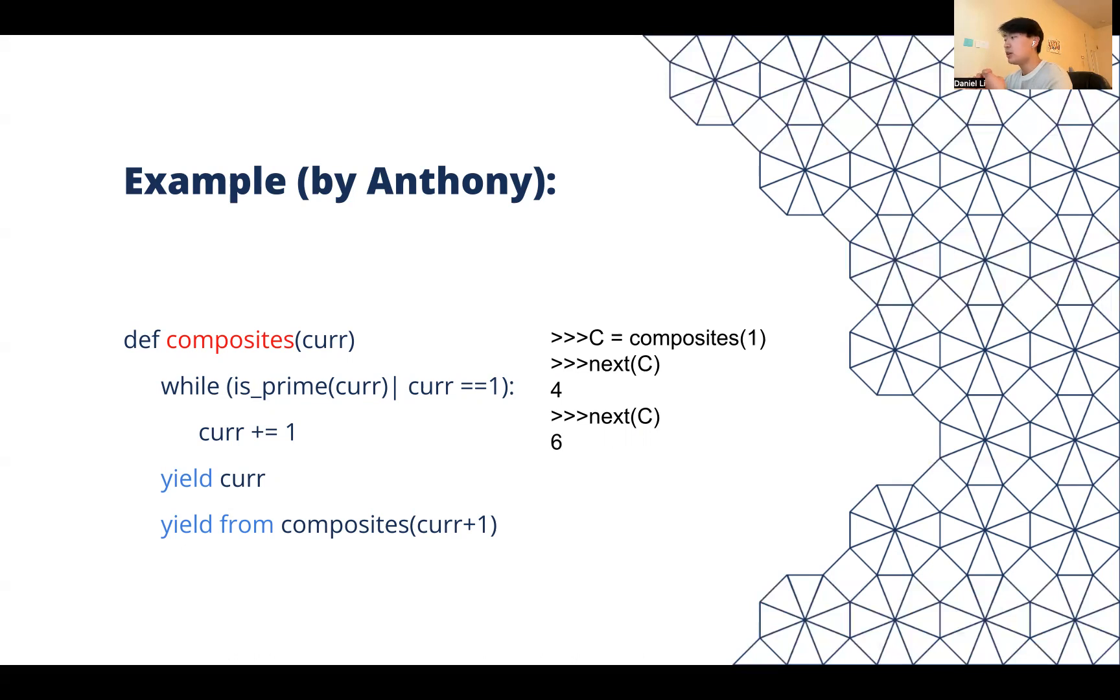What yield curr does is yield that smallest composite number. Then when we call the next line, which is yield from, it continuously yields the composite numbers after. In the example, we have composites with a curr value initially set to one. It increments until it hits four, because four is the next smallest composite number. So it yields four.